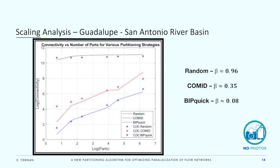This figure graphically represents the table from the previous slide. We can see that the worst-case partitioning strategy — when the system's links are labeled arbitrarily — is truly horrible; the connectivity quickly saturates at the number of nodes in the system. The Comid naming convention, on the other hand, yields a much better partition, with the connectivity scaling more closely with the number of parts sought than the size of the system. However, the BIPQUIC algorithm outperforms even this meticulous naming convention, with a preliminary beta value of 0.08.